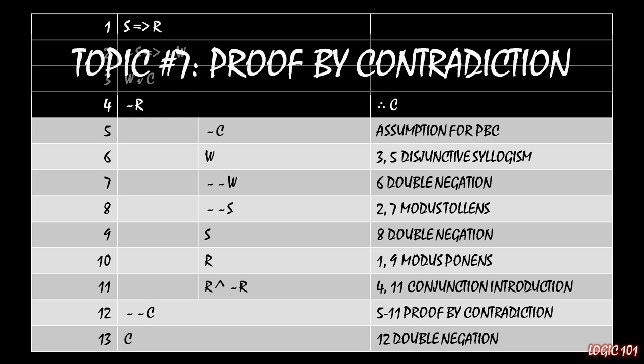So in this case, we see in row 11 that if not C is true, then it must be true that both R and not R are true. So in other words, R must be true and false simultaneously. That's a contradiction, which allows us to show that the original assumption was not true, which then allows us to show that C must be true as a result. Proof by contradiction is very neat and very useful. We're going to learn all about it in topic seven.